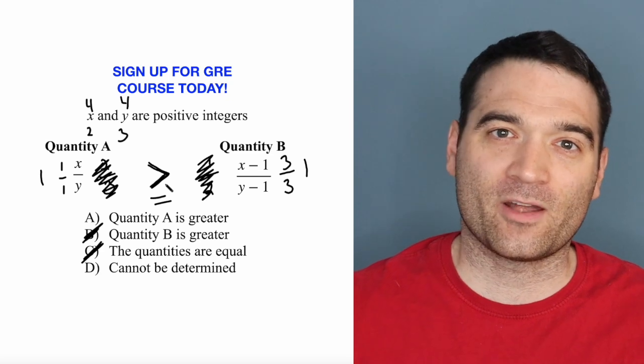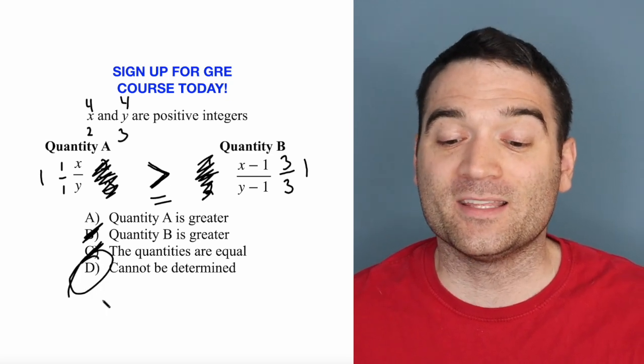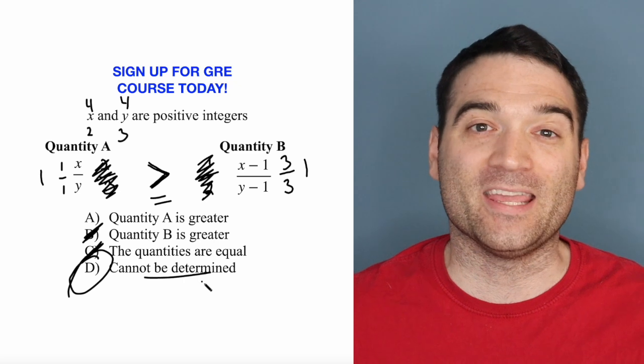In one case, quantity A is greater. In the other case, the two quantities are equal, which means that the answer cannot be determined here.